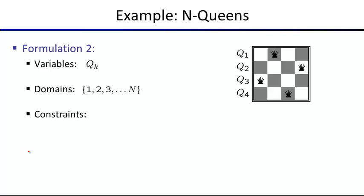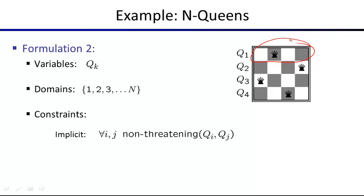A more efficient formulation uses fewer variables. Since there's never more than one queen per row, we use one variable q1 through q4 per row, where each variable encodes which column the queen is placed in. The domain for each is the four possible column positions. Constraints become a function: if a queen is placed in row i at a position, and row j at a position, are they threatening each other?